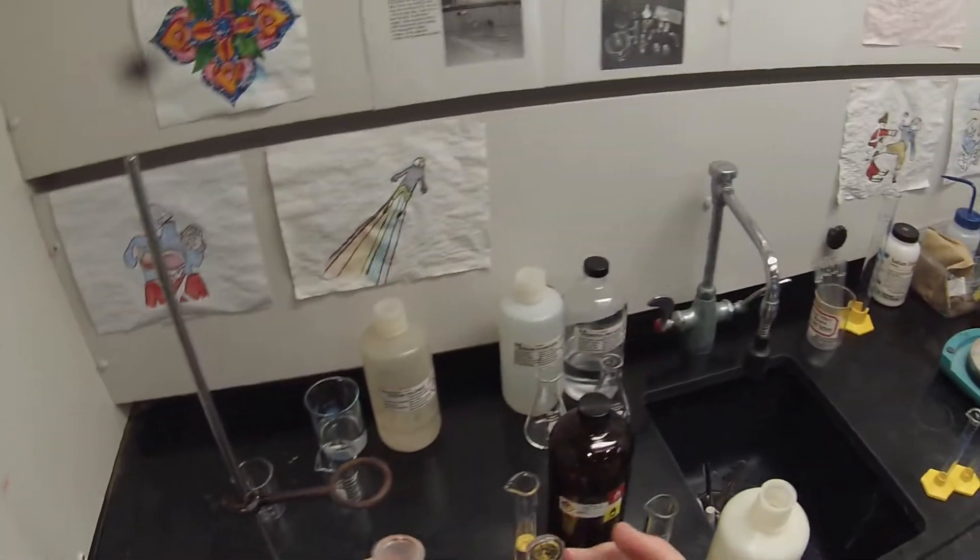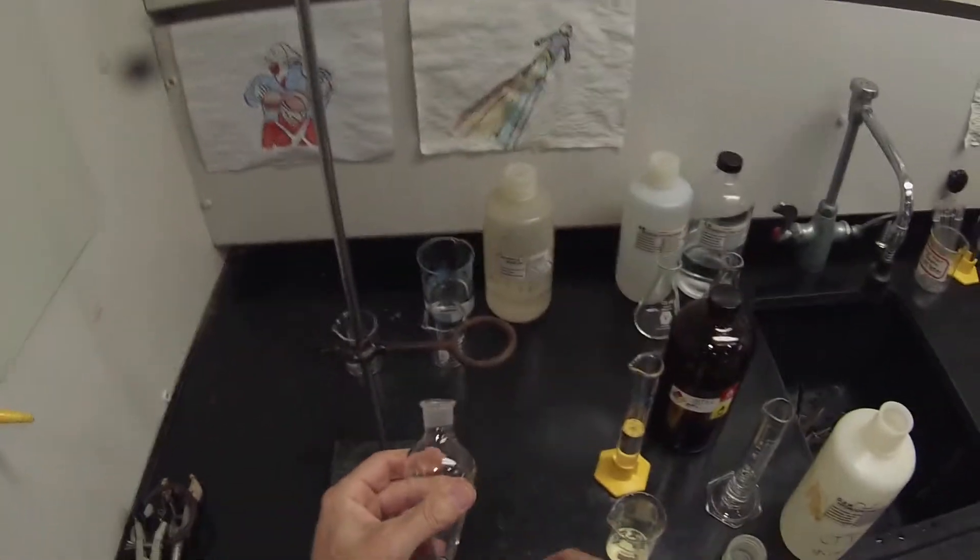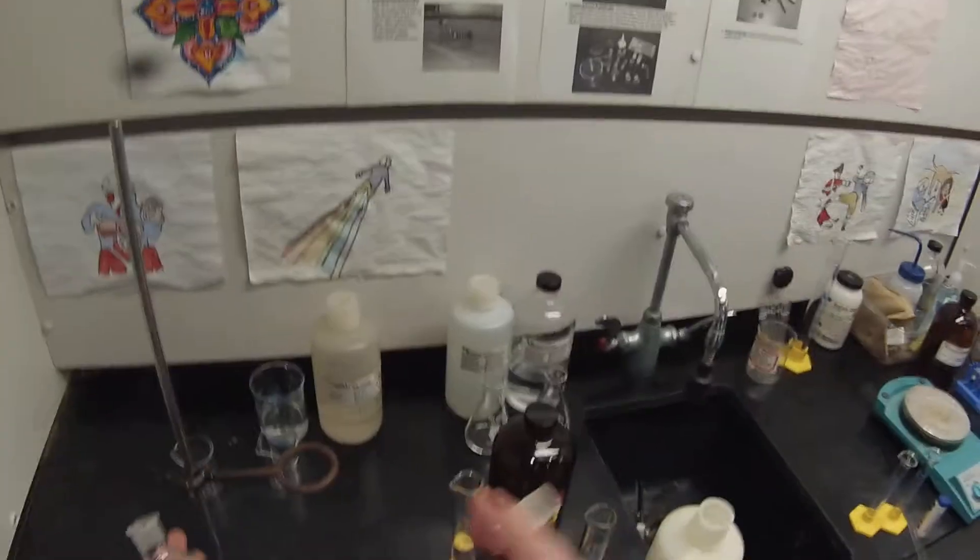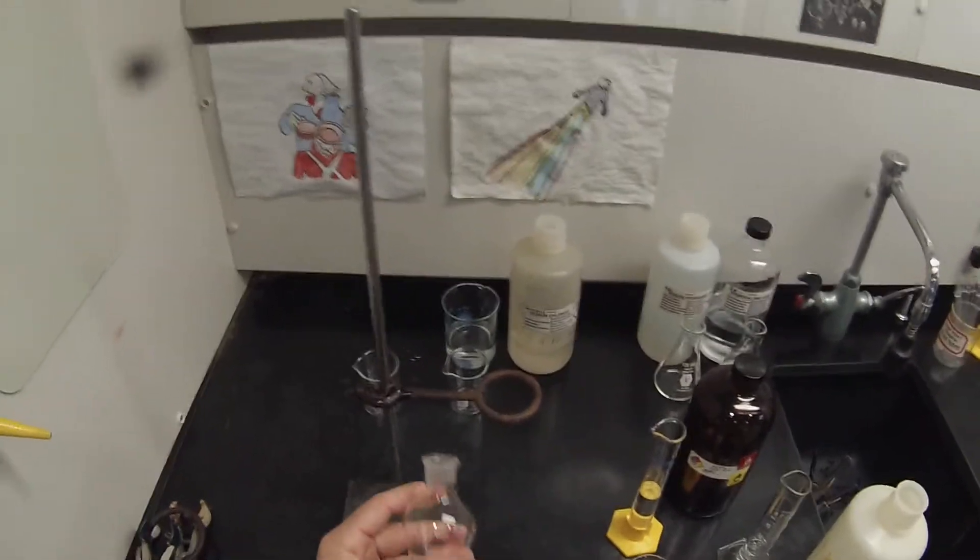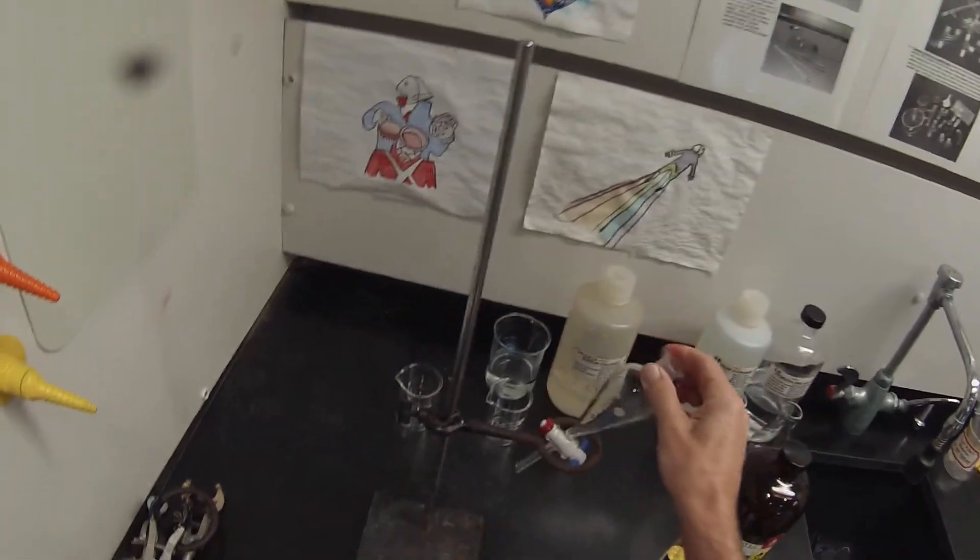We've got our separatory funnel and this is a slightly different size stopper for the top, a penny head that allows us to hold it. Smaller iron ring for the smaller funnel as well.